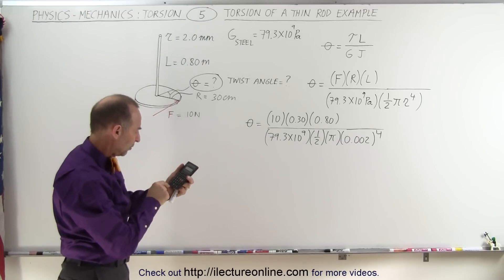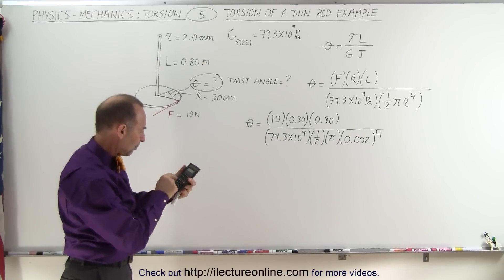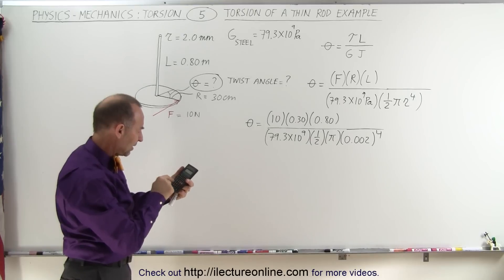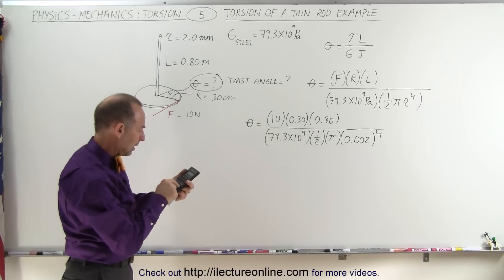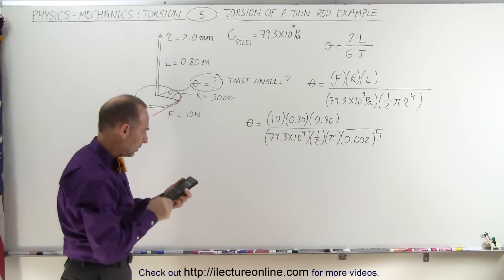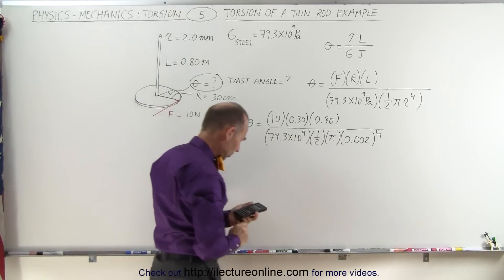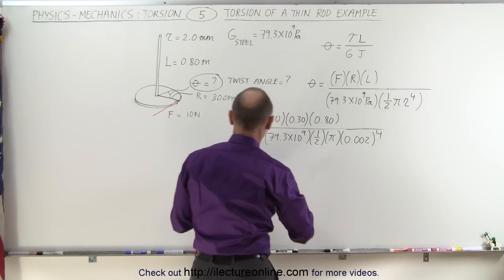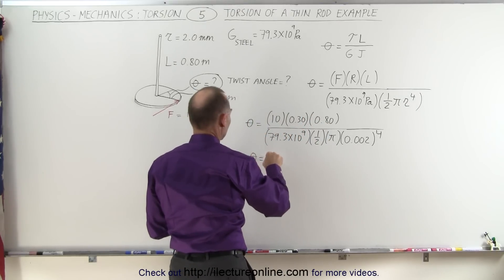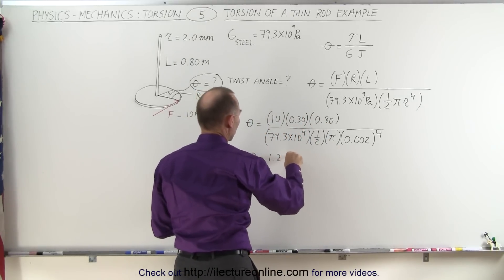10 times 0.3 times 0.8 divided by 79.3 times 10 to the ninth, divide by 0.5, divide by pi, and divide by 0.002 to the fourth power. And we end up with theta is equal to 1.2 radians.